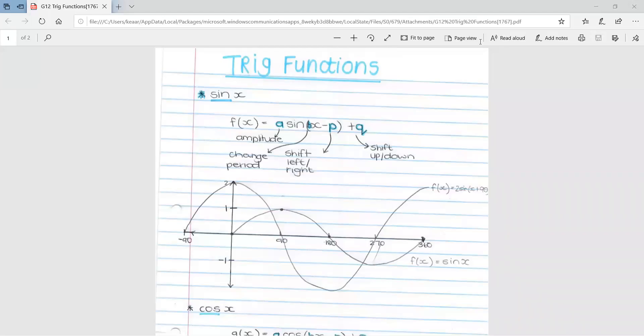This lesson is on trig functions. The first trig function is your sin x graph. This is a basic formula for all sin graphs: f of x equals a sin bracket bx minus p close bracket plus q. Each of these letters represent something different.